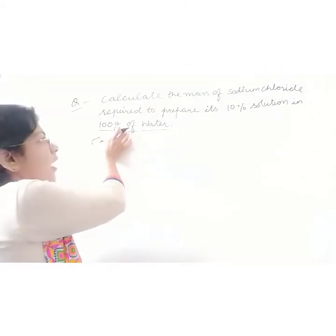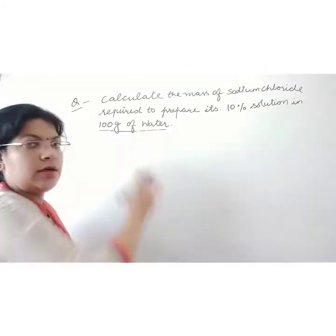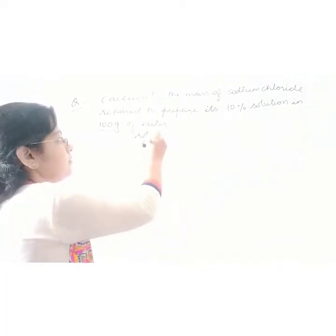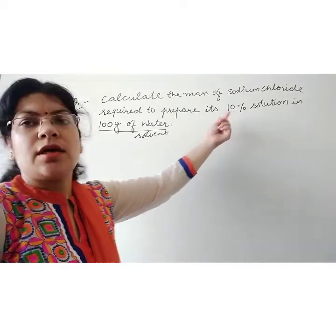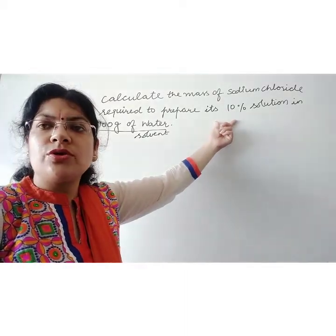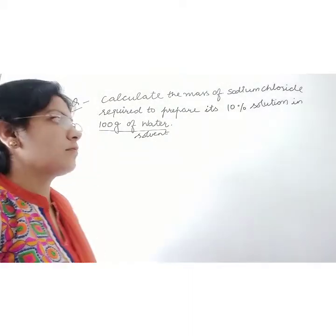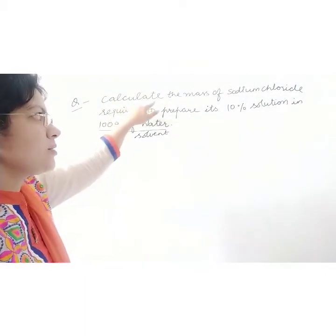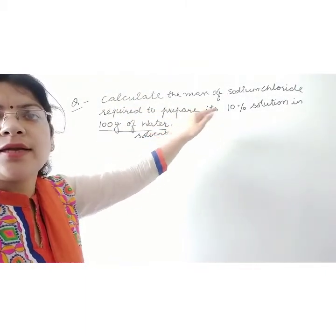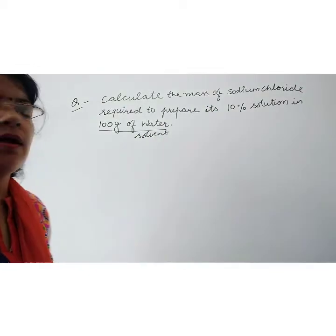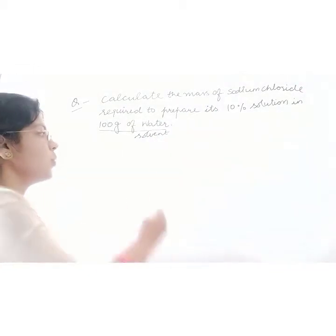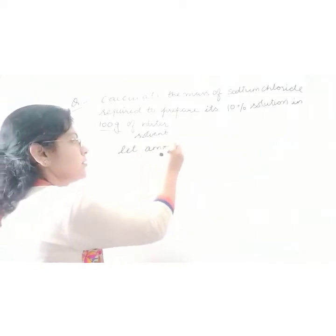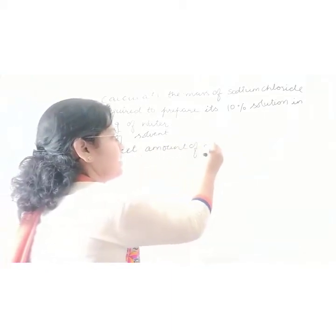Here, 100 grams of water is the mass of solvent, and 10% means the concentration of the solution is given. We have to calculate the mass of solute, that is sodium chloride. Let us suppose that the amount of solute is X grams.